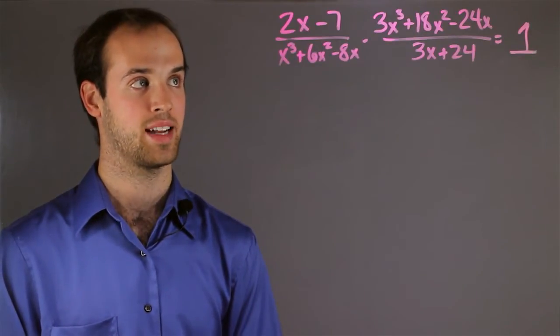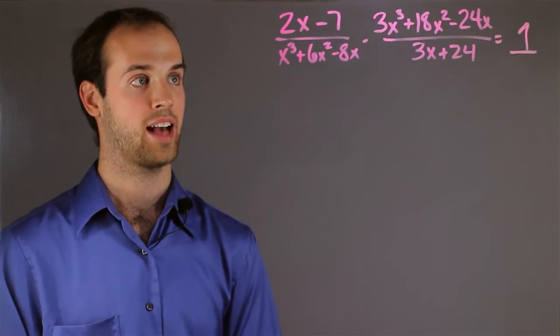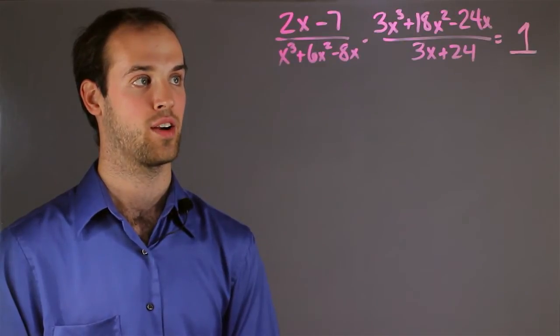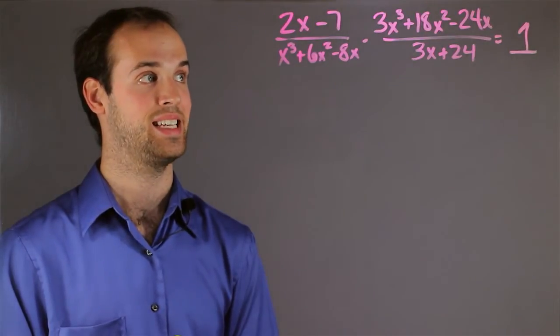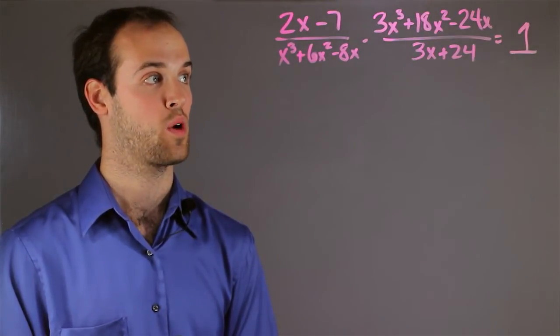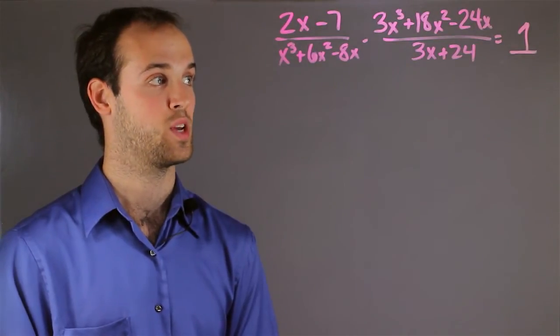We have 2x minus 7 over x cubed plus 6x squared minus 8x times 3x cubed plus 18x squared minus 24x over 3x plus 24 is equal to 1.